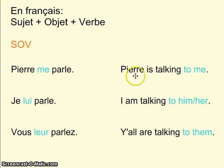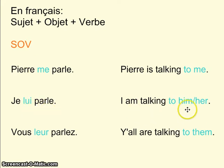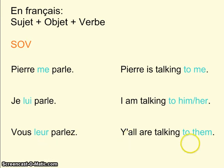Par exemple: Pierre me parle — Pierre is talking to me. 'To me' is the reason that we use an indirect object pronoun versus a direct object pronoun. In the previous example, Pierre is looking at me. Pierre is talking to me — Pierre me parle. Je lui parle — I am talking to him or to her. We use the same word, so context would be the determiner of whether it was him or her. Vous leur parlez — Y'all are talking to them.